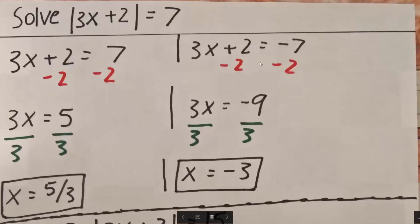Next, we'll do the second case. So if we subtract 2 from both sides, we get 3x is equal to negative 9. Divide by 3, and x is equal to minus 3.